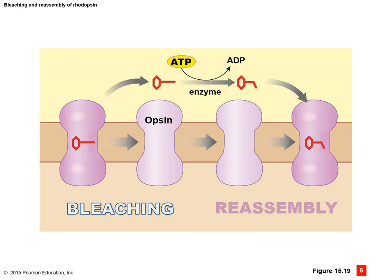This diagram shows the process of bleaching and reassembly of the rhodopsin molecule, which allows us to become sensitive again to light. We take the modified retinol, remove it, and reset the opsin — this is the bleaching process. Then we take that retinol with ATP, catalyzed by the enzyme retinol dehydrogenase, and change it back to its original shape. We can then put this back in through the process of reassembly.